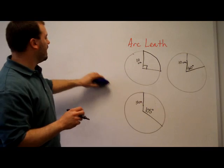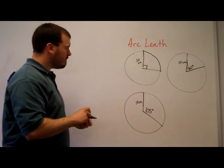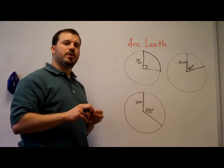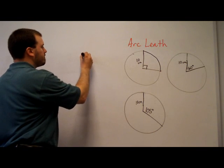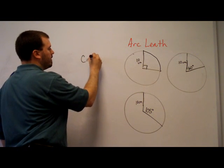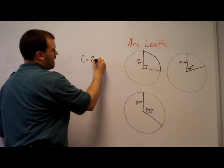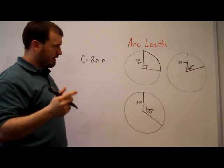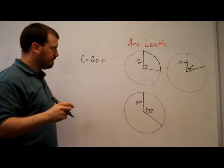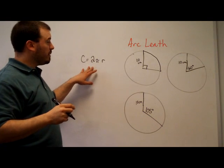So how do you find an arc length? Well, you need to know how to find circumference, first of all. The circumference of a circle is found by doing two times pi times the radius of the circle. And that's talked about in previous lessons. So circumference of a circle is two pi r.